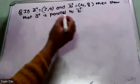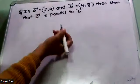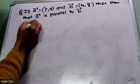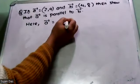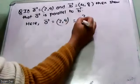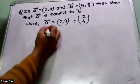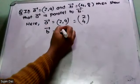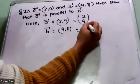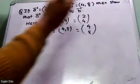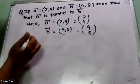Now the question is: given vector A and vector B, show that vector A is parallel to vector B. Vector A equals (2, 4) and vector B equals (4, 8). We will use the dot product formula to find the angle between them.